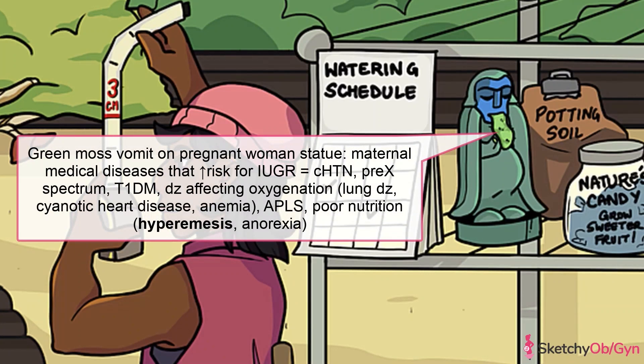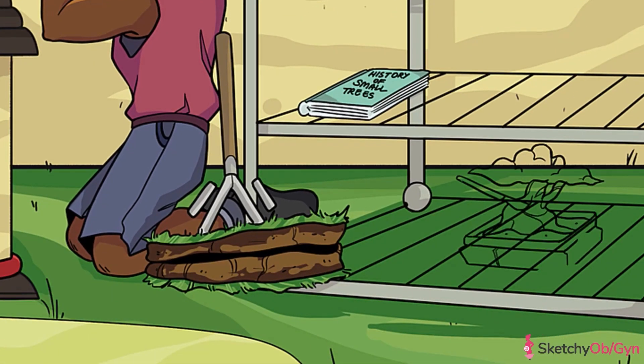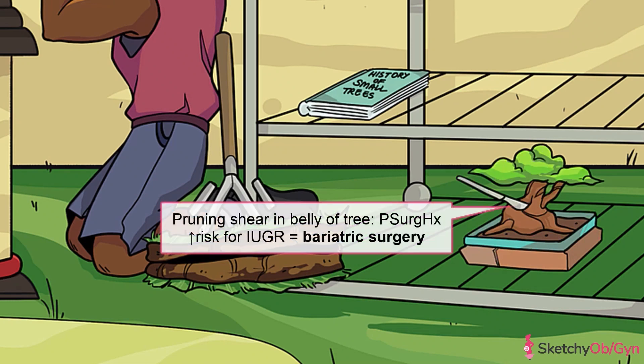Poor or inadequate maternal nutrition is another risk factor for fetal growth restriction. Keep an eye out for any diseases that can cause malnutrition, such as anorexia or hyperemesis gravidarum. In terms of surgeries, any surgery that compromises maternal nutrition, such as bariatric surgery, is a risk factor for IUGR — we'll remind you to ask about bariatric surgery with a scalpel stuck in the belly of this bonsai tree.